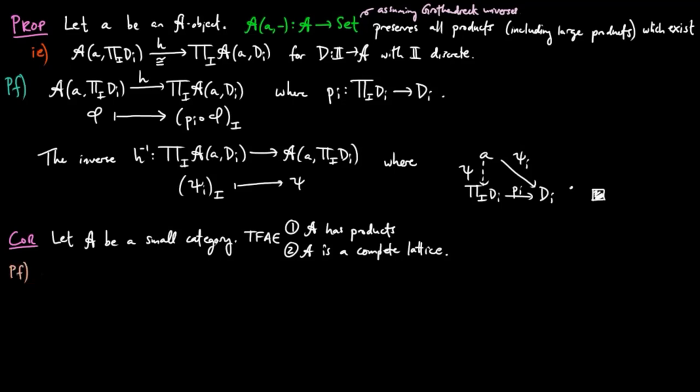For the proof, since a lattice is just a complete order and the product in a lattice is the meet, it is enough to show that A is a thin category. In other words, for each pair of A objects A and A prime, the cardinality of morphisms in A from A to A prime is at most one.